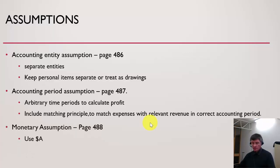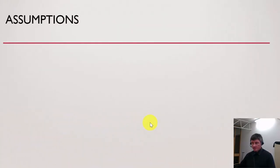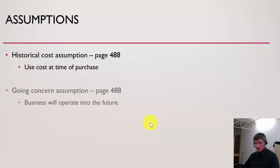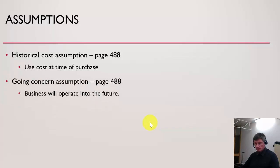The monetary assumption is fairly straightforward — it must use Australian dollars, not litres or any other measure. The historical cost assumption uses the cost at time of purchase, because we want more reliable information in our balance sheet. The going concern assumption assumes the business will continue to operate in the future and not stop at any time soon, and that is why we value assets, liabilities and owner's equity as we do in our balance sheet.